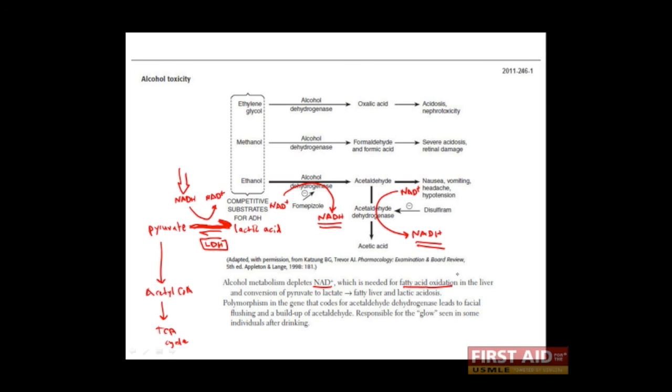NAD+ is also required for fatty acid oxidation in the liver. When fatty acids cannot be oxidized efficiently, this is thought to result in a fatty liver, which is another effect of chronic alcoholism.